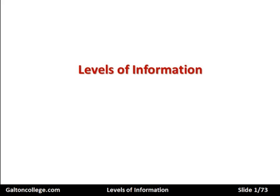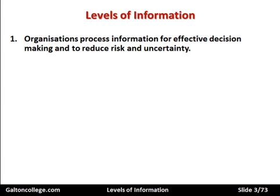This class is concerned with levels of information. Organisations process information for effective decision-making and to reduce risk and uncertainty. There is a purpose in acquiring information. Information starts life as data, which is then processed into information, and the whole purpose of the exercise is to help management make good decisions and to try to reduce risk and uncertainty.